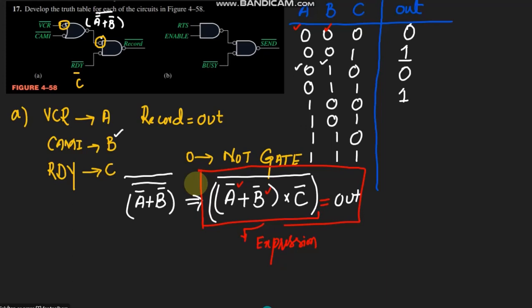For the next combination: a=1, b=0, c=0 — a' = 0, b' = 1, so 1+0 = 1, and c' is 1, so 1×1 = 1 and the whole complement is 0. For a=1, b=0, c=1: 1' = 0, 0' = 1, so 1+0 = 1, and 1' = 0, so 0 will make it 0 and the whole complement will be 1 here.